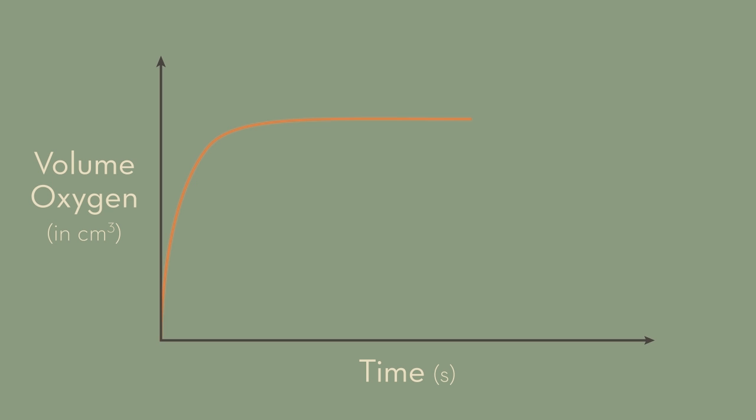We can measure the rate of this reaction at any time by selecting a point on the curve and drawing a line tangent to the curve. Calculating the gradient of the tangent will give you the rate of the decomposition of hydrogen peroxide at that point in time.